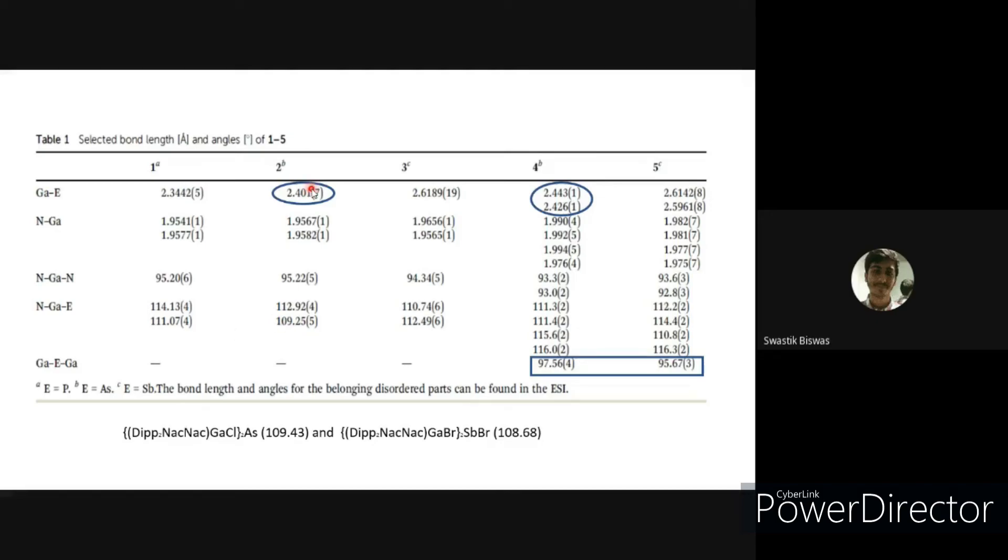Here, see that the gallium-arsenide bond length is slightly elongated as compared to 4 in comparison of 1 or 2. Also, the E-gallium angle for both 4 and 5 is very much decreased in comparison to the Dipp nacnac gallium chloride arsenide and Dipp nacnac gallium bromide antimonide, which might be due to the high steric demand of the halogen at the gallium center and their orientation between the Dipp substituents of the nacnac ligand, which makes a greater distance between Dipp nacnac gallium moiety.